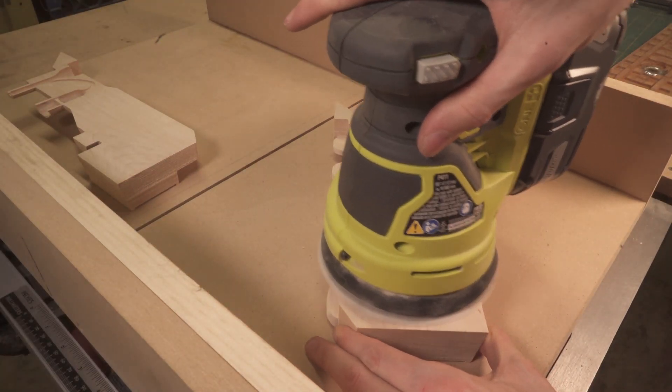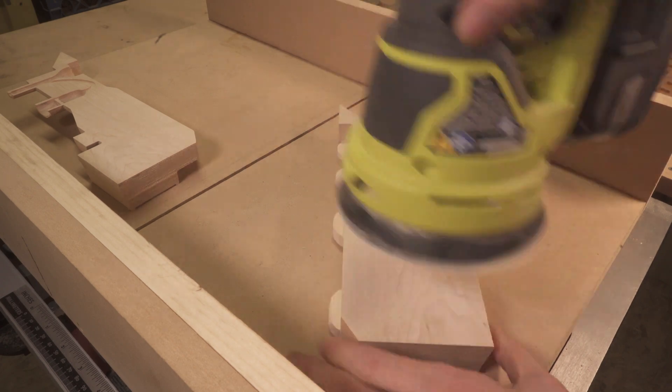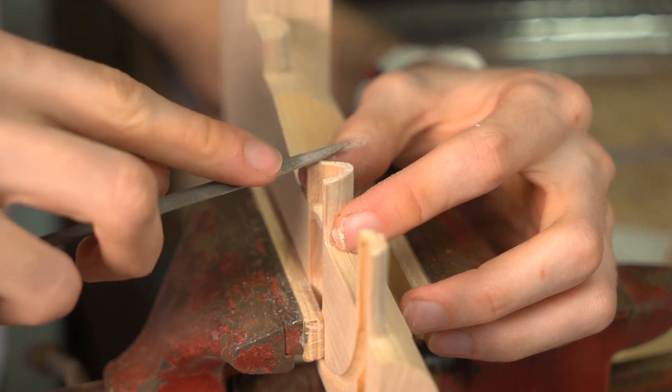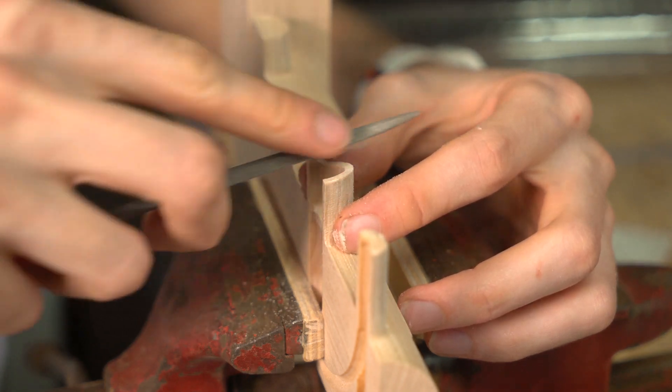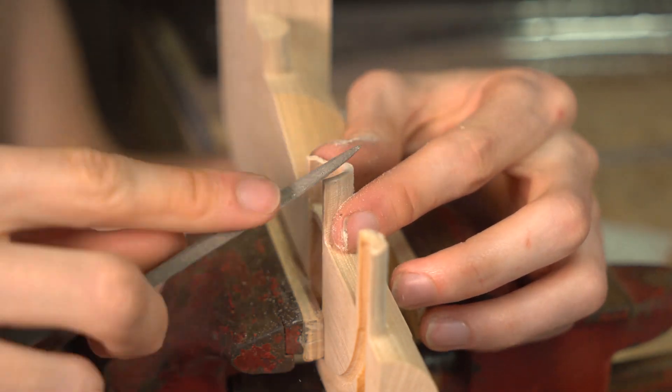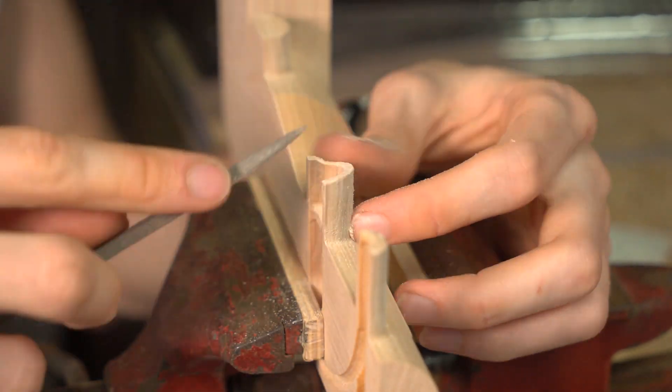After that, I used the orbital sander to smooth out the inside surfaces of the train. I had a little bit of chip out on the thinnest part of the smokestack, the second smokestack, so I filed those down to be flat and then sanded those off-camera.